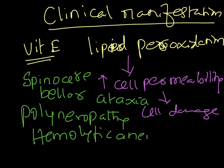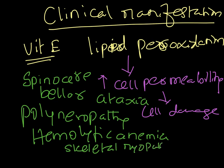Hemolytic anemia occurs because lipid peroxidation attacks the red blood cell membrane, breaking open red blood cells and leading to hemolysis. Skeletal myopathy can also occur, as lipid peroxidation affects skeletal muscle membranes, increasing cell permeability. Even the retina is affected in vitamin E deficiency, giving rise to pigmented retinopathy.